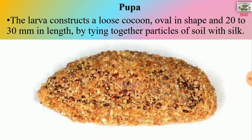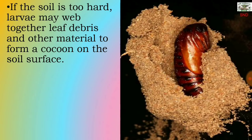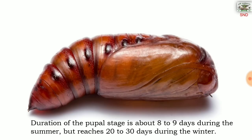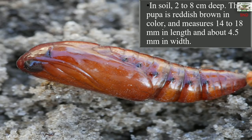The pupa: the larva constructs a loose, oval-shaped cocoon with dimensions of 20-30 mm in length by tying together particles of soil with silk. If the soil is too hard, larvae may web together leaf debris and other material to form a cocoon on the soil surface. The duration of the pupal stage is about 8-9 days during summer but reaches 20-30 days during winter. In soil, at 2-8 cm depth, the pupa is reddish brown in color and measures 14-18 mm in length and about 4.5 mm in width.